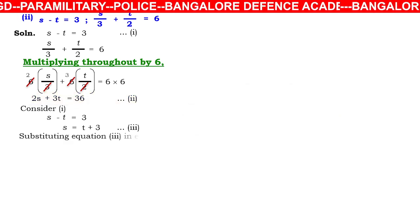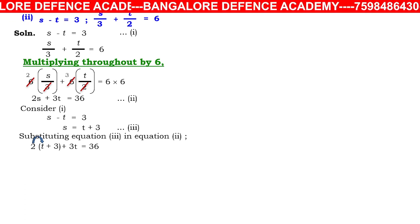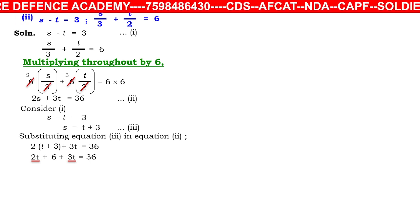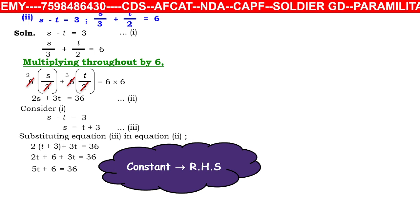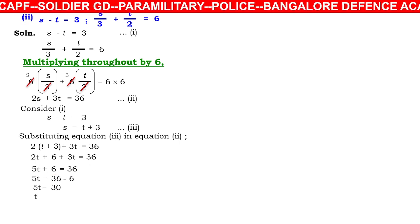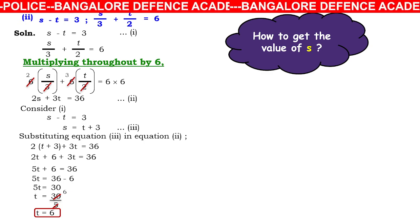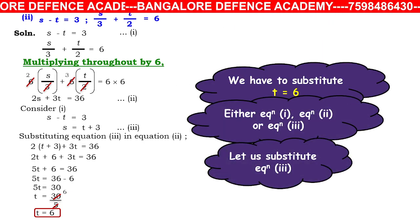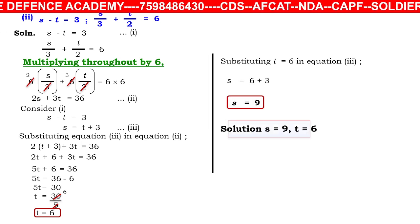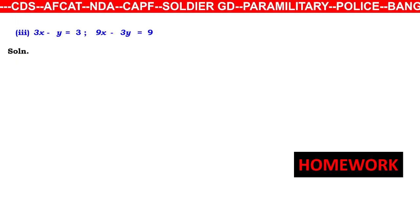Substituting s = t + 3 into equation 2: 2(t + 3) + 3t = 36, giving 2t + 6 + 3t = 36, so 5t = 30, thus t = 6. Substituting t = 6 into equation 3: s = 6 + 3 = 9. The solution is s = 9 and t = 6.